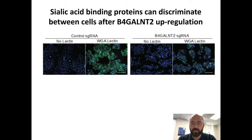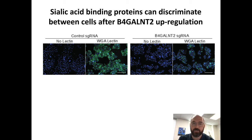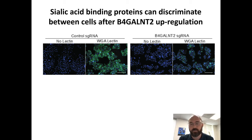The viral hemagglutinin is the receptor-binding protein that binds sialic acids, but many proteins called lectins also broadly bind sialic acids. We used wheat germ agglutinin (WGA), fluorescently labeled, to test binding. In control cells, WGA binds abundantly, but in B4GALNT2-expressing cells, that binding drops dramatically. It seems this is not flu-specific — proteins in general that recognize sialic acids have difficulty doing so after B4GALNT2 has added this extra sugar.